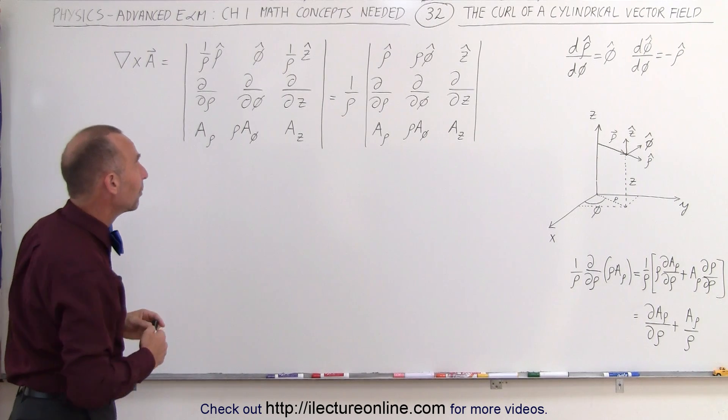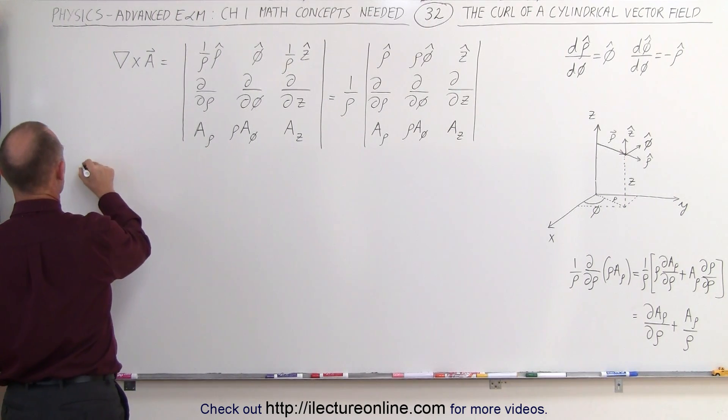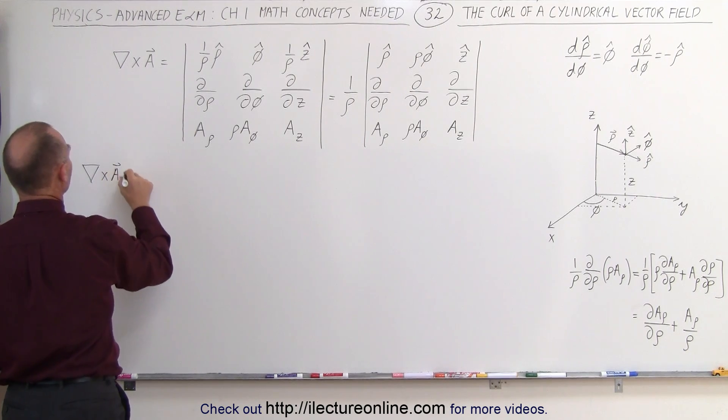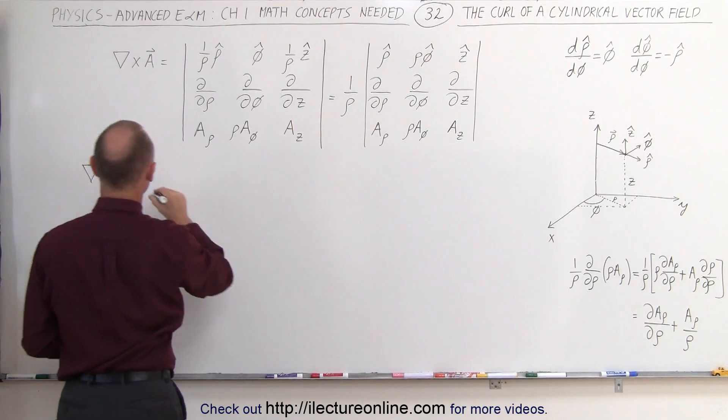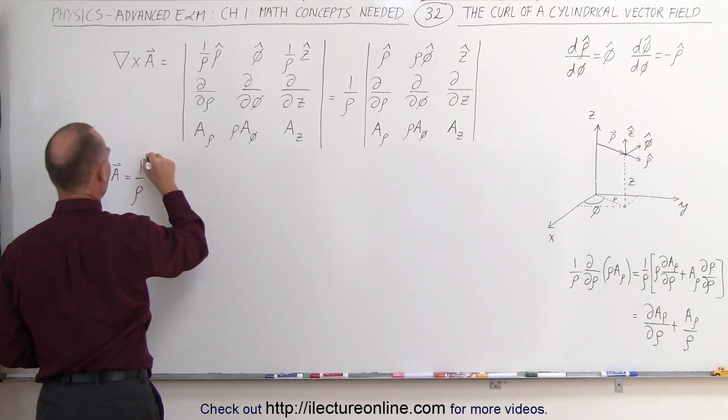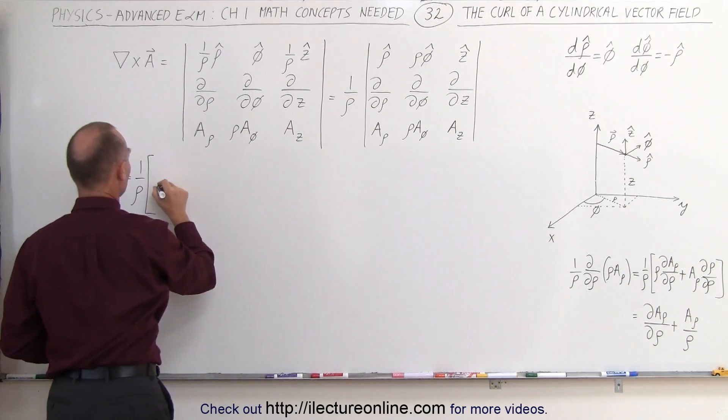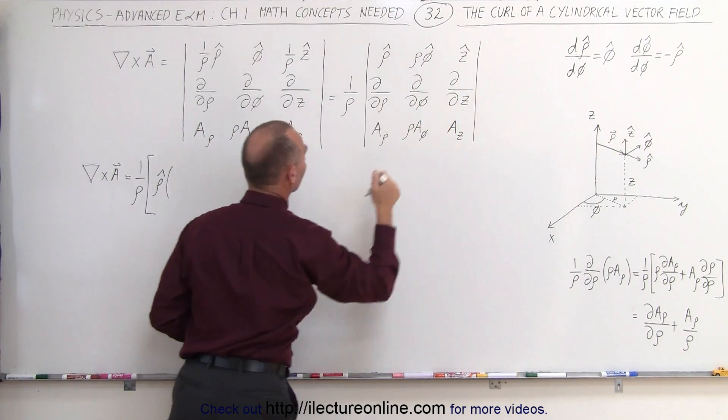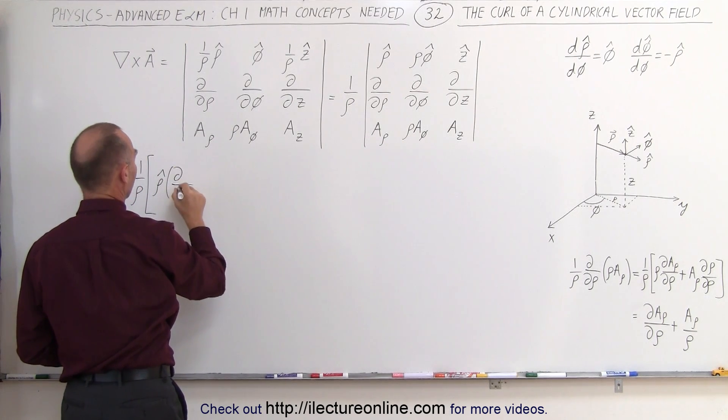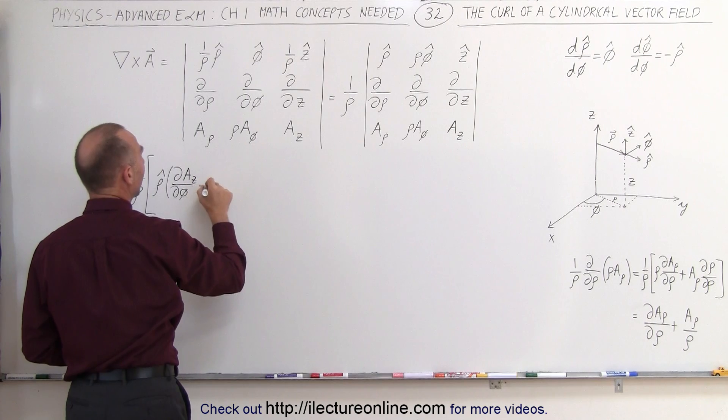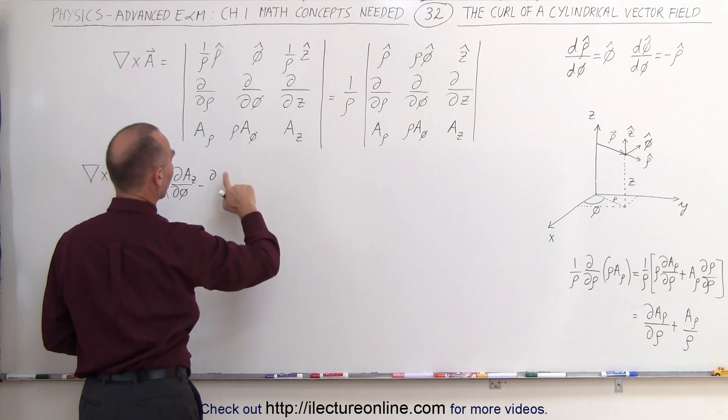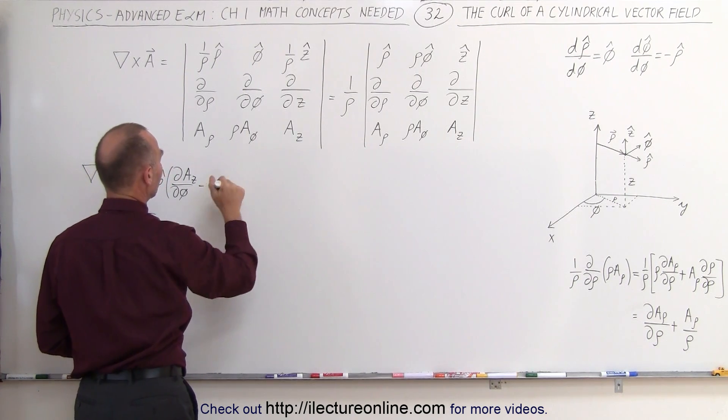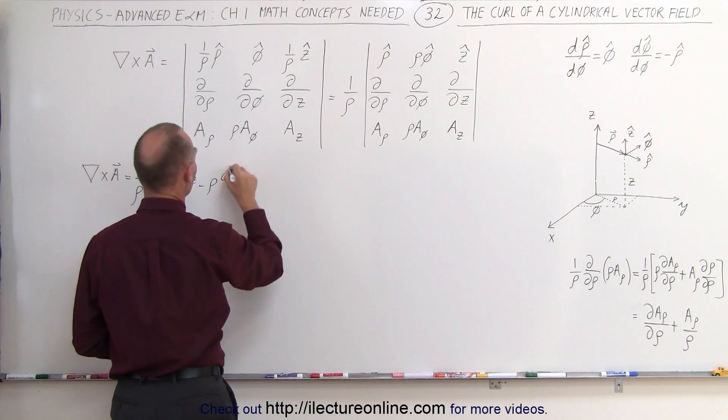Now let's go ahead and go through the operation. So the curl of a vector quantity or a vector field is going to be equal to 1 over row times, we take the first element here, the row unit vector, and we multiply that times the product of this times this, minus this times this. So this will give us the partial with respect to phi of a sub z minus the partial, let's bring the row over, times the partial with respect to z of the a component of the vector.